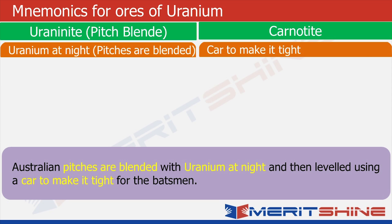Close your eyes and imagine: the Australian coach and management have instructed their curator to make a pitch which will make life difficult for the batsman. So what he does is go at night and blend the soil in the pitches with uranium, and then use a car to make it tight for the batsman. A funny and absurd situation undoubtedly, but this will help us remember the names of ores.